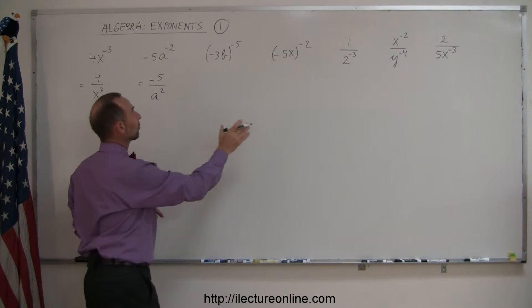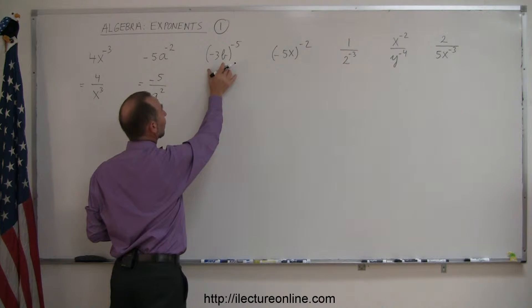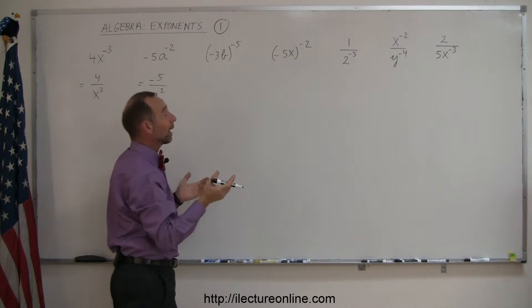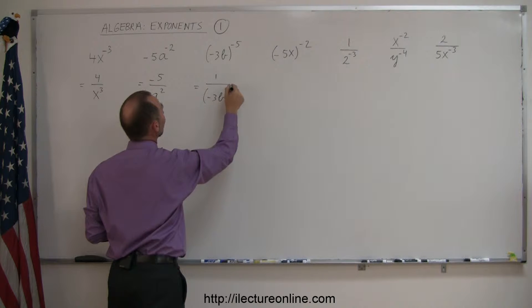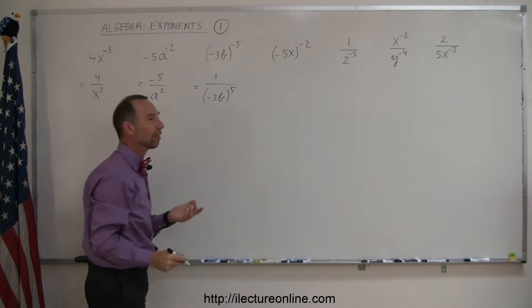Here, the minus 5 applies to everything inside the parentheses because we have parentheses around it, so this can now be written as 1 over the whole thing, minus 3b to the 5th power. So now that becomes a positive 5 power.